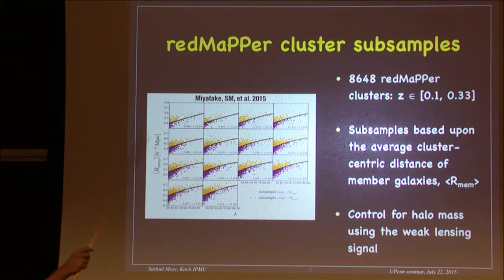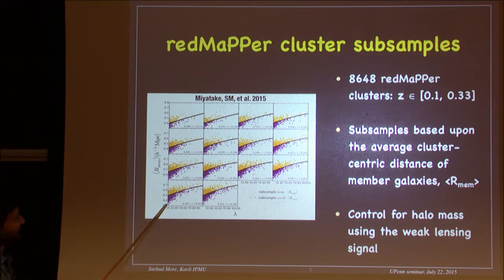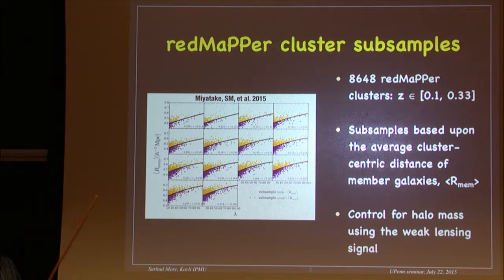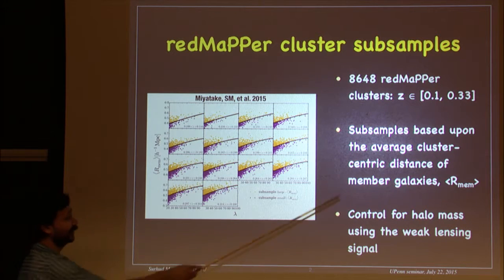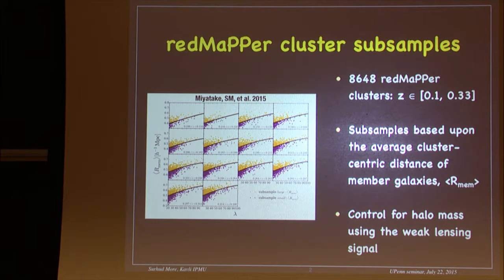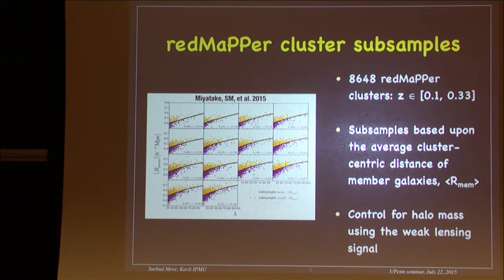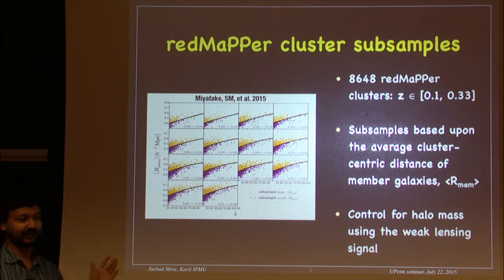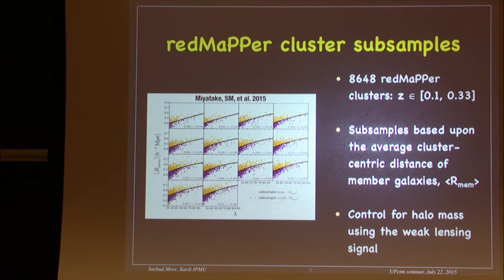This plot shows the average cluster-centric distance of member galaxies. We split the sample into two subsamples based on this property — the average cluster-centric distance of the members. These two subsamples have the exact same richness, and we think richness correlates with mass. The idea was to select samples with the same mass but different properties. We initially thought galaxy concentration should relate to dark matter concentration, which is why we chose this parameter.